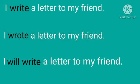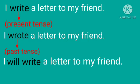I will write a letter to my friend. In the first sentence, the work is going on. So, this form of verb is called present tense. In the second sentence, the action is already done. So, this form of verb is called past tense.